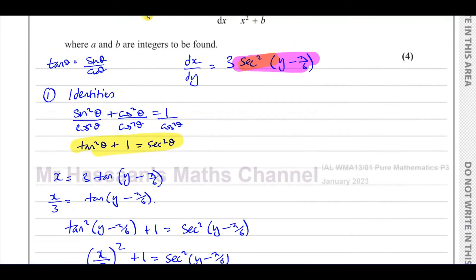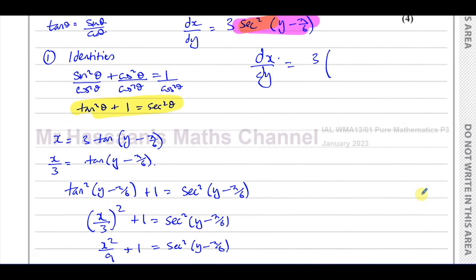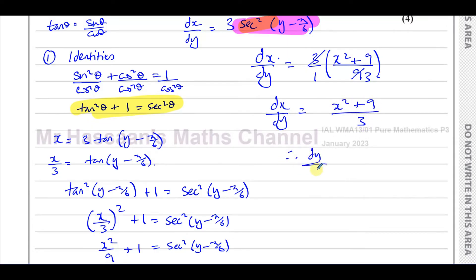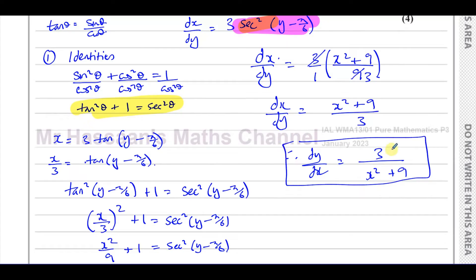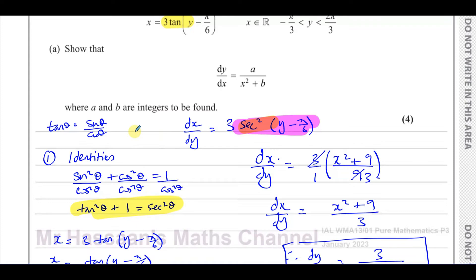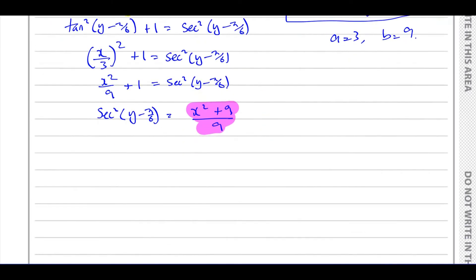So dx/dy = 3 × (x² + 9)/9. The 3 cancels with the 9 to give dx/dy = (x² + 9)/3. Therefore dy/dx = 3/(x² + 9). That is what we had to show. We can now write a = 3 and b = 9. That's the answer using Method 1 — identities.